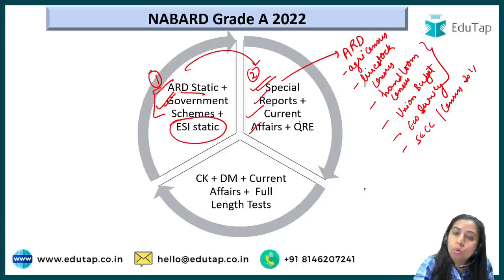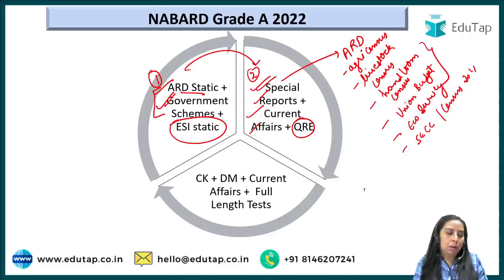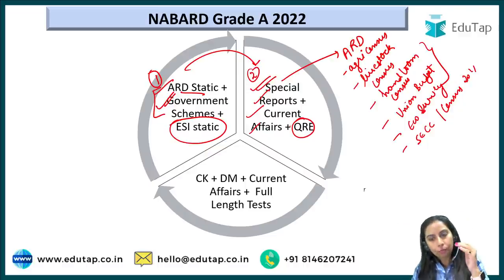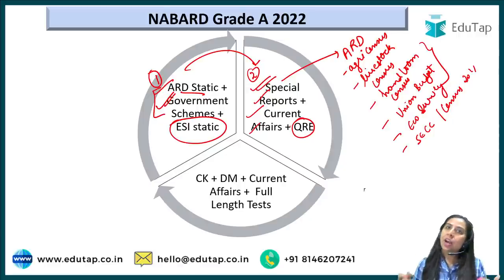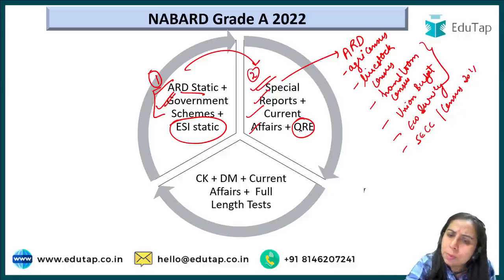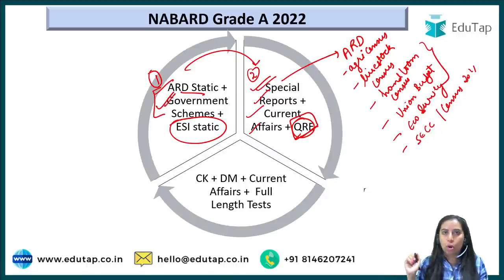After the special reports, prepare current affairs for ESI and ARD. Along with that you should also do Quant, Reasoning, and English. Please do not ignore QRE — sectional cut-off you have to clear. If you have been preparing for other examinations like banking, test yourself through previous year papers to see if you actually know QRE or are just in the illusion. If your score is good, you can forgo it; otherwise, go for it now to avoid pressure later.